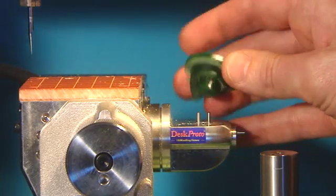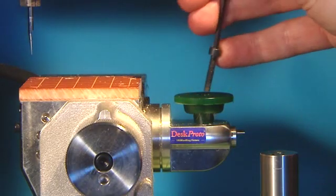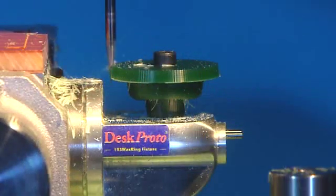Step 2: Turn over the wax disc, tighten the screw once again and machine the other side.